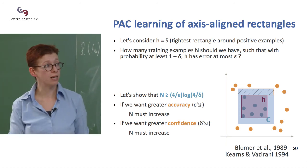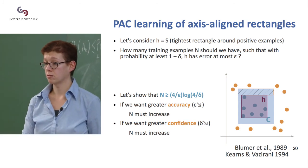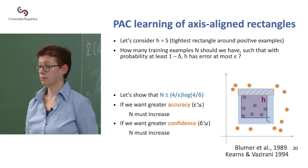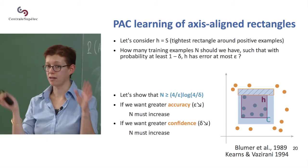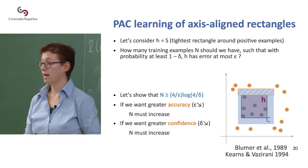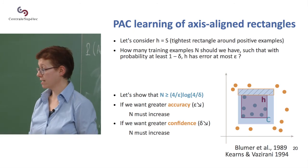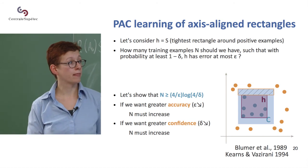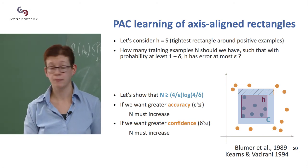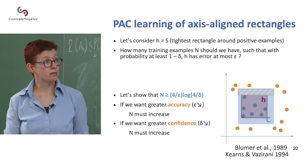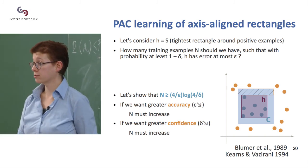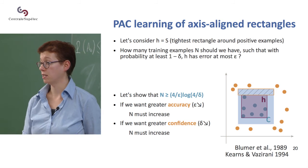Similarly, if I want a greater confidence, so I want to be sure that this bounding of the probability of error happens in most cases, I need to lower delta, so that this gets closer to 1. So if I lower delta, this quantity also increases, which also means that I need more training examples.